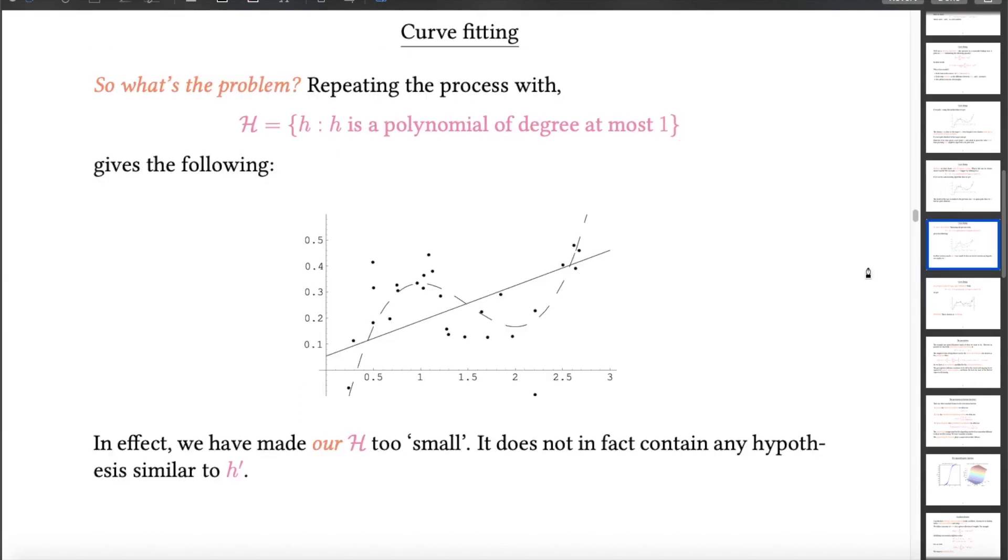If I'd gone the other way, things might not have been so rosy. If, for example, I pick my function using the same training algorithm, but only allowing a polynomial of degree at most 1, or in other words, a straight line, then unsurprisingly, the h that I get, which minimizes the sum of the squared errors between h's predictions and the actual y values in the training set, I get a straight line which clearly is not a good approximation to the dashed one.